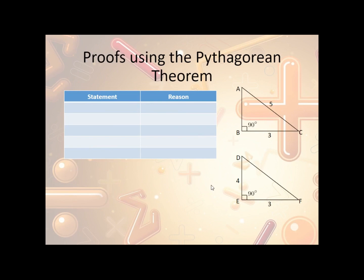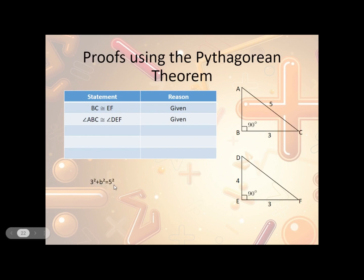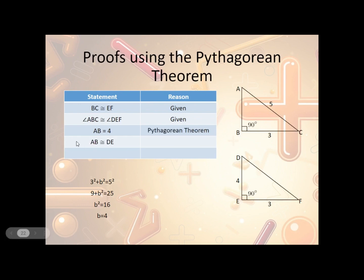Let's look at this example again — there's a shorter way we can do this. We state what we know: BC and EF are congruent, that's given. We also know that angle ABC is congruent to angle DEF — that's given too. So if we can prove that AB and DE are congruent, we can use side-angle-side. Using 3 squared plus B squared equals 5 squared: B squared equals 16, so B equals 4, meaning AB equals 4. Since both AB and DE equal 4, AB is congruent to DE by the definition of congruent side lengths. Therefore, triangle ABC is congruent to triangle DEF by the side-angle-side theorem.